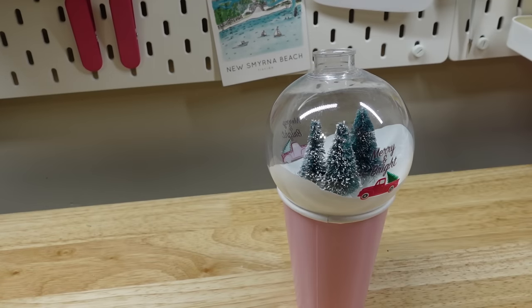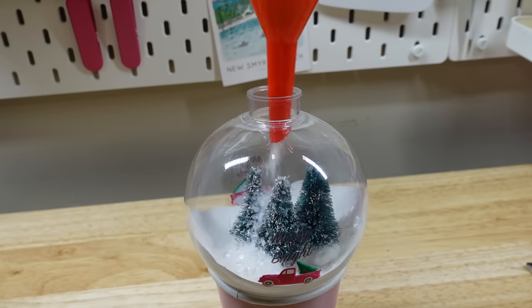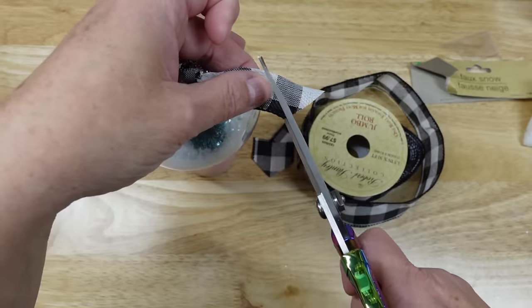I got some faux snow from the Dollar Tree and I used a funnel to sprinkle it on down in there. I finished it off by adding some buffalo check ribbon and that's it.